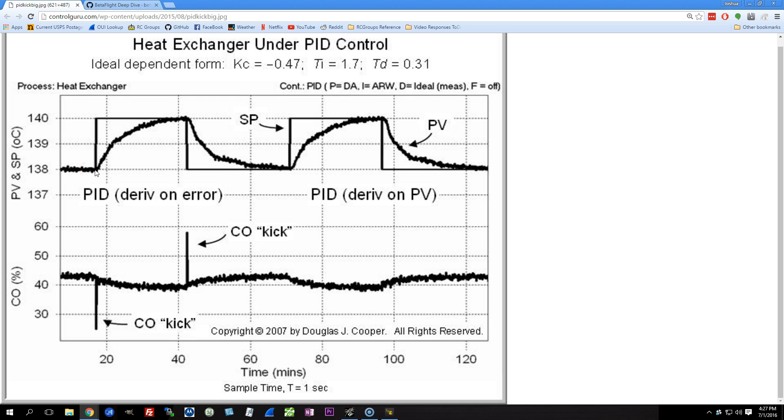Whenever the D term is derived from the error, then any rapid change in the set point will result in a D term kick.